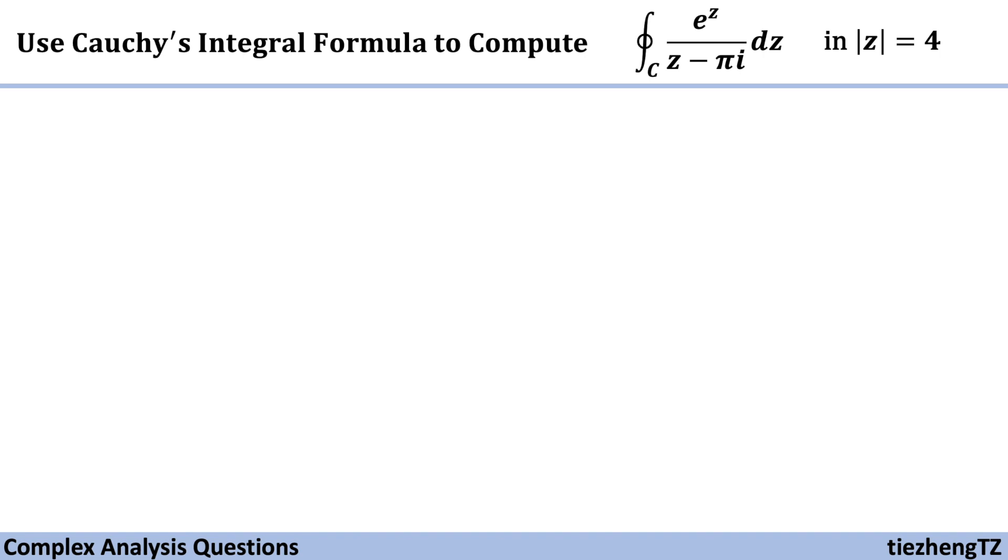Today's question is to use Cauchy's integral formula to calculate this given integral function in the given domain |z| = 4.